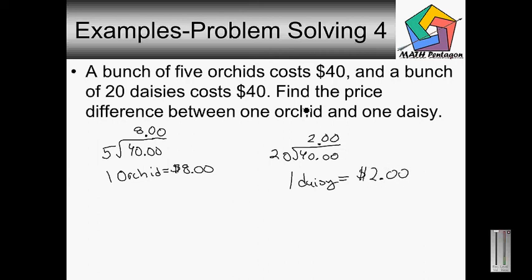Now the question is asking us, find the price difference between one orchid and one daisy. Well, all you gotta do is subtract eight dollars from two dollars, and you get six dollars as the price difference between one orchid and one daisy. And that's our final answer, six dollars. That is the price difference.